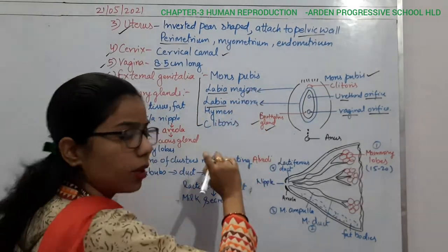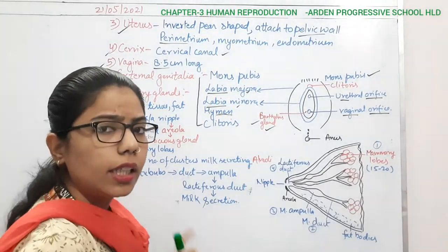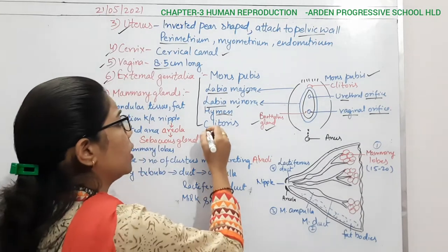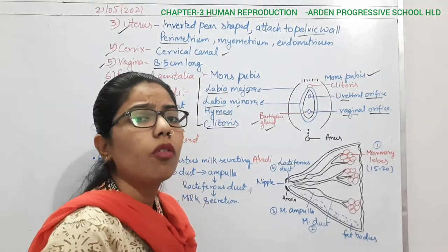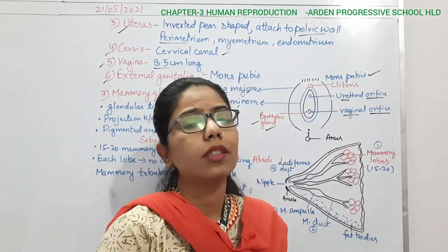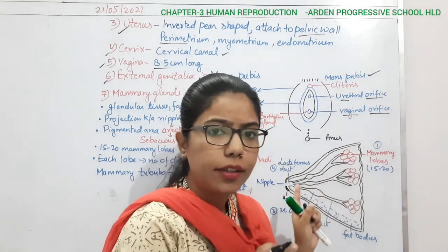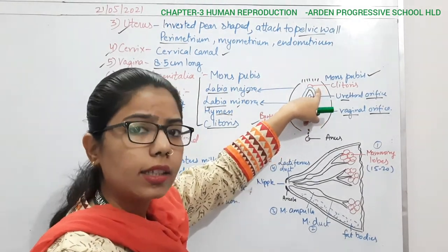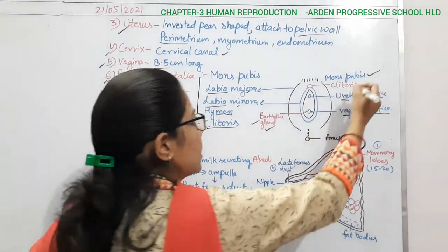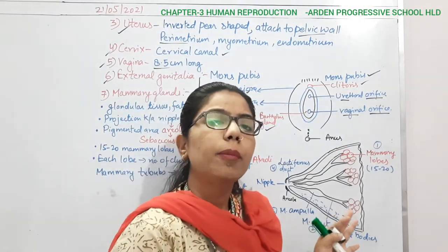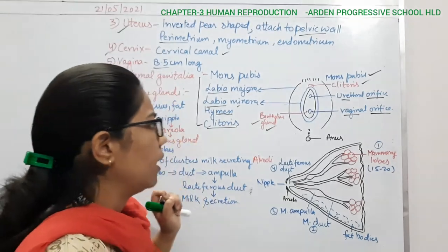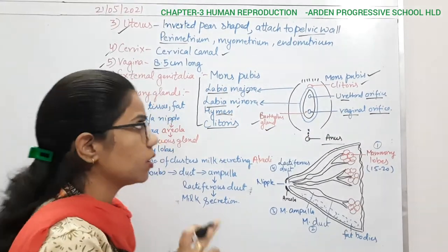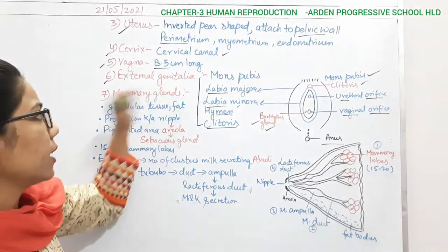The hymen is a covering present above the vagina. The clitoris acts like a penis — in the male reproductive system the erection of the penis is very important for entry into the female urogenital tract. Similarly, the clitoris is the erectile portion for the female, having a function related to the penis. The lower part of the body ends with the anus. These are all the parts of the female reproductive system and they are the external genitalia.